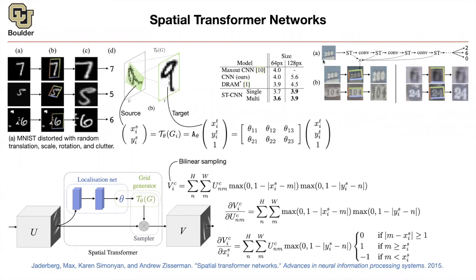The dataset is street view house numbers. The maxout CNN referenced is a paper by Goodfellow during his PhD, and there is just one maxout layer towards the end. These are street view house numbers and the objective is to read numbers like 260 and output 260. There are four transformer operations happening in four consecutive layers: one right after the input, one after the first convolution, one after the second, and one after the third.